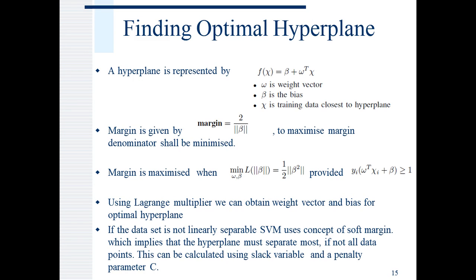Continuing the optimal hyperplane discussion, the general equation of hyperplane is given as f(x) equals beta plus omega transpose xi, which results in a margin which is equal to 2 upon beta. Therefore, to maximize the margin, we have to minimize beta, provided the constraint yi omega transpose xi plus beta greater than or equal to 1 holds. We can use Lagrange multiplier to solve and obtain weight and bias for optimal hyperplane.